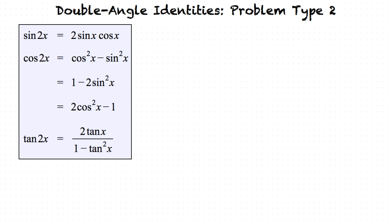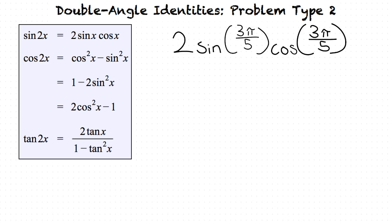How will these double angle formulas help in solving double angle identities? Let's solve our first example problem so that you can see how the process works. Our first example problem will be 2 times sine of 3π over 5 times cosine of 3π over 5. Here we can see that our problem is in the form of 2 times sine of x times cosine of x, with x equaling 3π over 5.